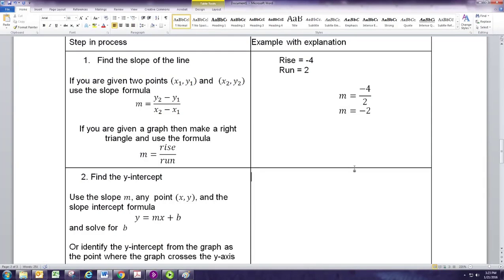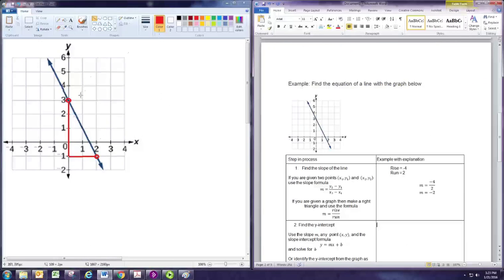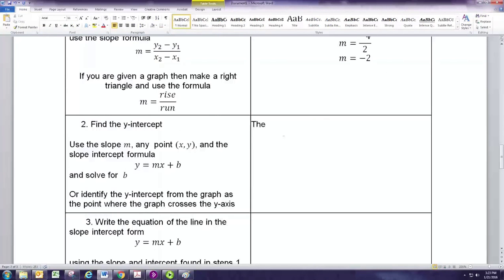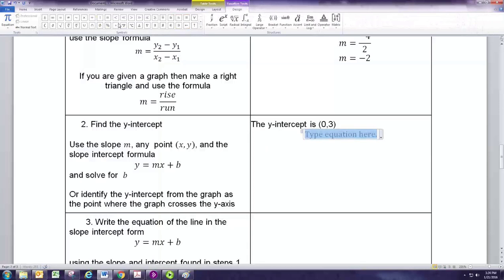We also want to find the y-intercept when we're given the graph. And you can just identify that from the point where the line crosses the y-axis. So going back to the graph here, we know that we actually did that as our first point, found that 0, 3 is the point where the line crosses the y-axis. So just from inspection, you can see that as well. So the y-intercept is 3, which means b equals 3.